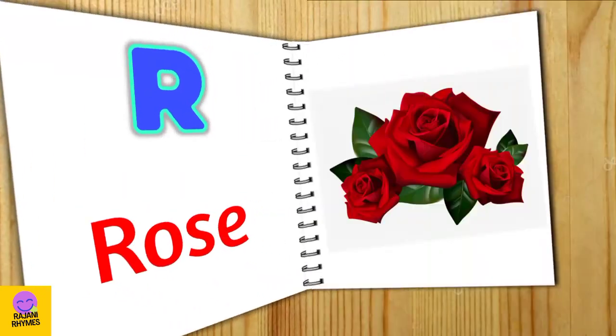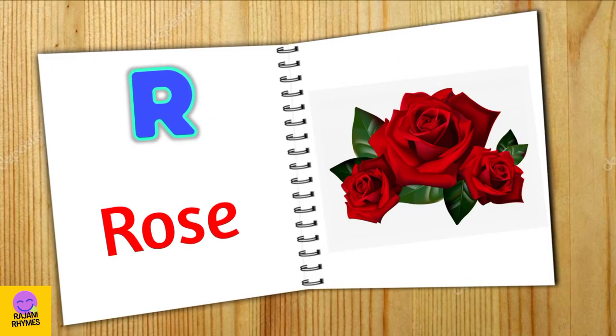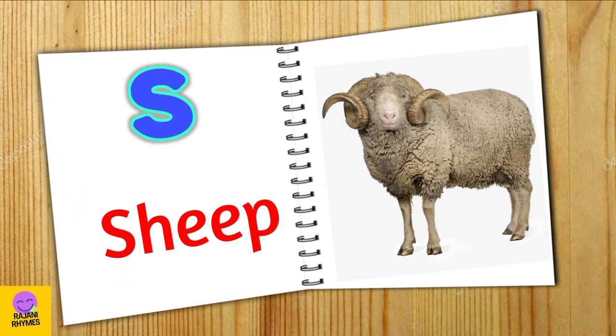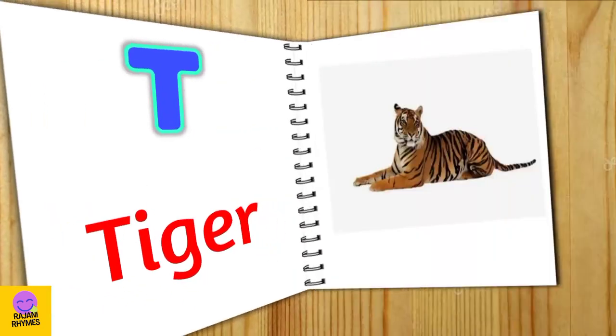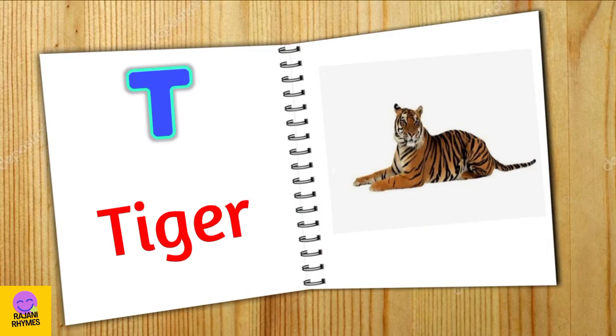Q. Q for queen. R. R for rose. S. S for sheep. T. T for tiger.